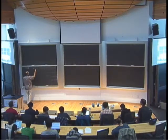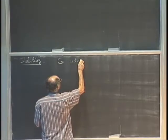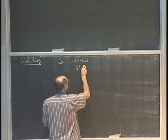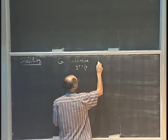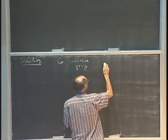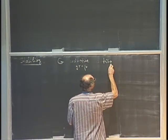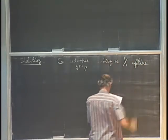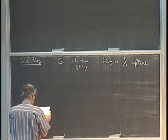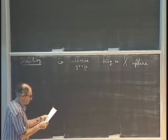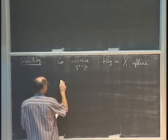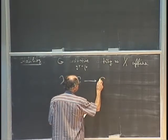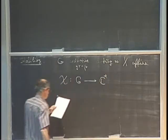Suppose we have a reductive group acting on some affine variety, and we would like to define a GIT quotient. So we fix a character, a one-dimensional character of this group.